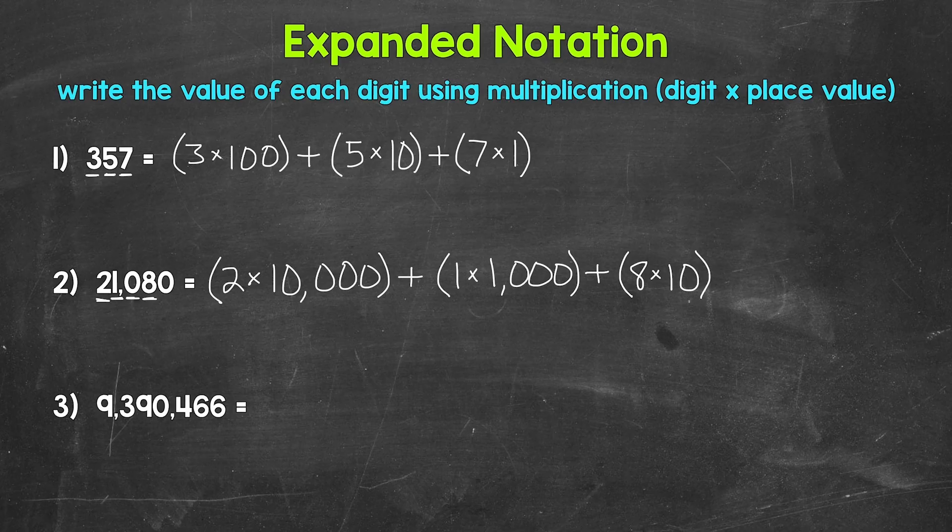This 8 has a value of 8 tens, 8 groups of 10, which is 80. And then our last digit — we have a 0 in the ones place, so we don't have a value to write for the ones place. We are done. That's the expanded notation for 21,080.